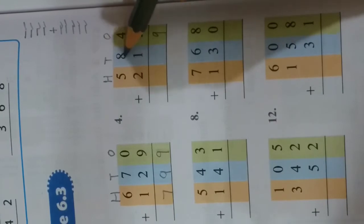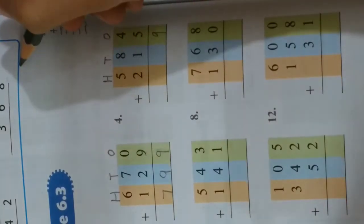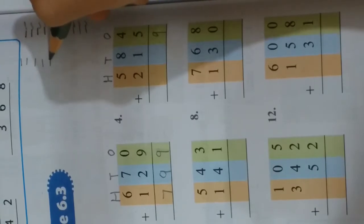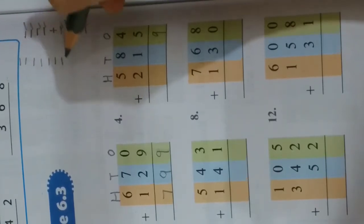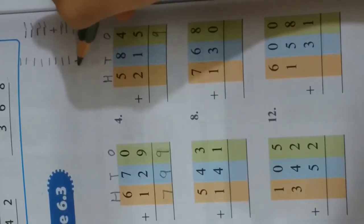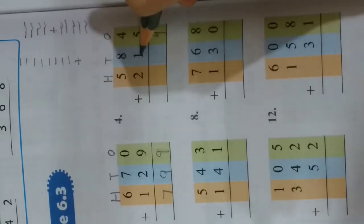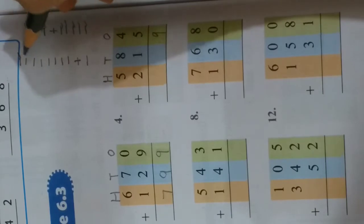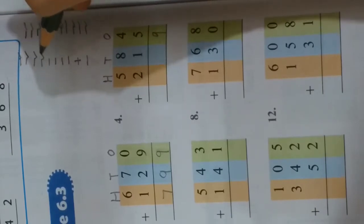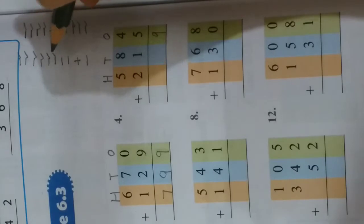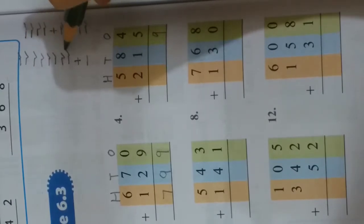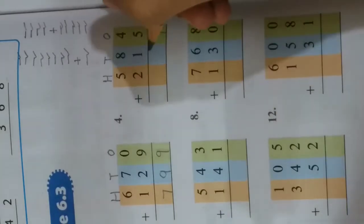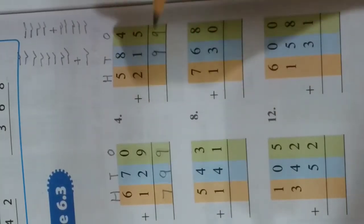Now at tens place on top you have 8 — draw 8 lines. Put a plus sign. Below you have 1 — draw 1 more line. Count all: 1, 2, 3, 4, 5, 6, 7, 8, 9. You get 9, so write 9 over here.